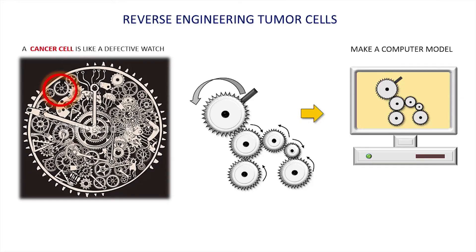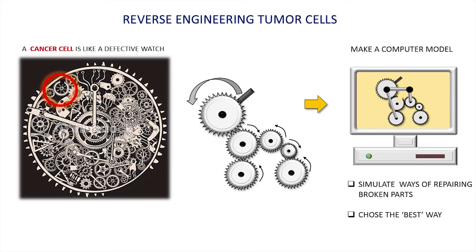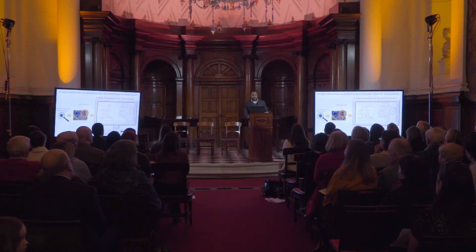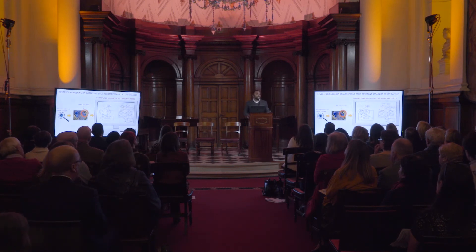This gives you the blueprint of the machine, and you can use the blueprint to build a computer model of the system. You can use the computer model to figure out ways of repairing the system if you have damaged components in it. We use this approach to reverse engineer a very aggressive form of drug-resistant colon cancer.